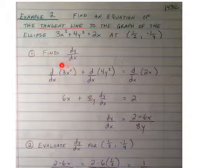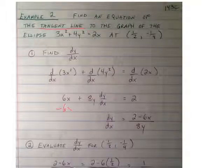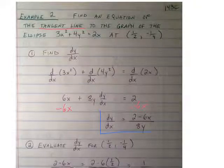So the derivative of 3x squared is 6x. The derivative of 4y squared is 8y dy/dx. There's that chain rule again. And the derivative of 2x is 2. If I solve for dy/dx, I subtract 6x from both sides. And then I divide both sides by 8y, and I get my dy/dx.